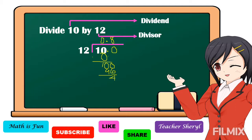Then we can add zero continuously. Bring down zero: 40 divided by 12 is equal to 3. Three times 12 is equal to 36. 40 minus 36 is equal to 4.